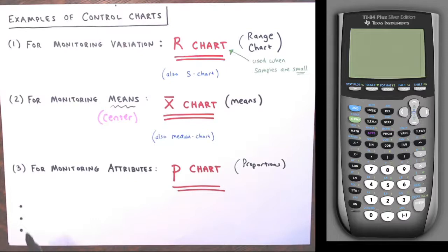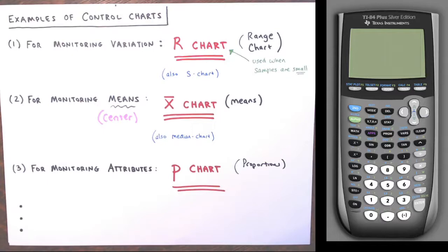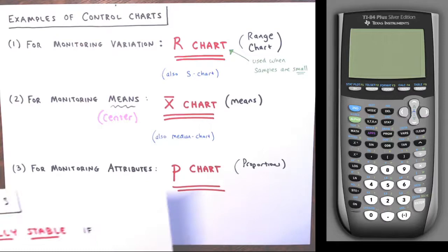Another type of chart we'll get into in a future video is for monitoring certain attributes — looking at proportions, called a p-chart: what proportion of each sample has a given attribute. There are also S charts, median charts, and other charts out there you can use to monitor a process. If a process is not in control, you have to go back and try to fix it to gain more stability, though we're not going to cover how to do that — just how to determine whether it's stable or not.